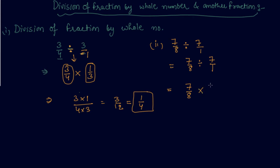When I convert the sign of division into multiplication, I will change the position of numerator and denominator. So what I get is 7 by 56. On dividing the numerator and denominator by 7, I get 1 by 8. These are the questions based on division of fraction by whole number.